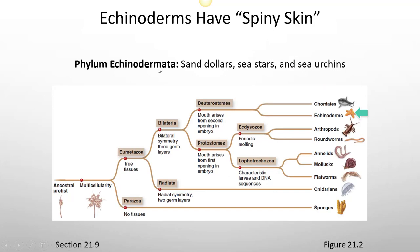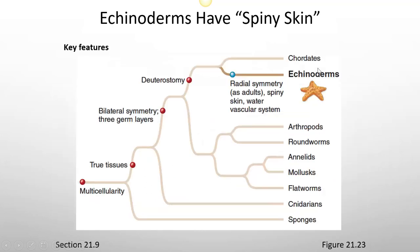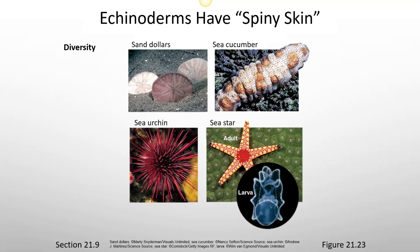The phylum Echinodermata includes sand dollars, sea stars, and sea urchins. Characteristics of echinoderms include radial symmetry when they're adults, spiny skin, and a water vascular system. They include sand dollars, sea cucumbers, sea urchins, and sea stars.